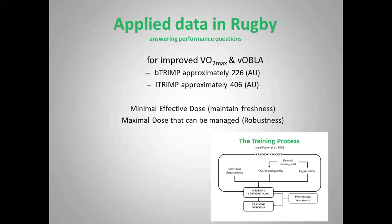There's also the other approach people talk about: the maximal dose that can be managed and robustness. I think this is a philosophical standpoint that practitioners may choose between — and perhaps even at different times of the season. If we know training load also contributes to fatigue, do we necessarily want to push athletes to the maximal dose that can be managed? And what is the definition of robustness — is it what they can maximally achieve without breaking down, or without showing signs of fatigue and being unable to fully recover?